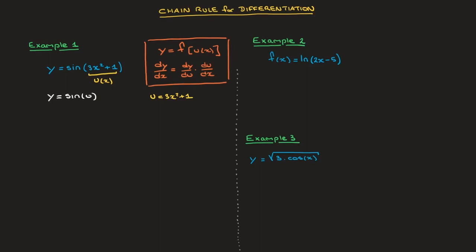Now we look at the chain rule and see that we need to find dy/du as well as du/dx. For du/dx, all we have to do is differentiate u with respect to x. Using the power rule, we find that du/dx is equal to 6x. Now we find dy/du — we differentiate sine of u in the same way that we would differentiate a function of x, the only difference being it's now a function of u. So dy/du is equal to cosine of u.